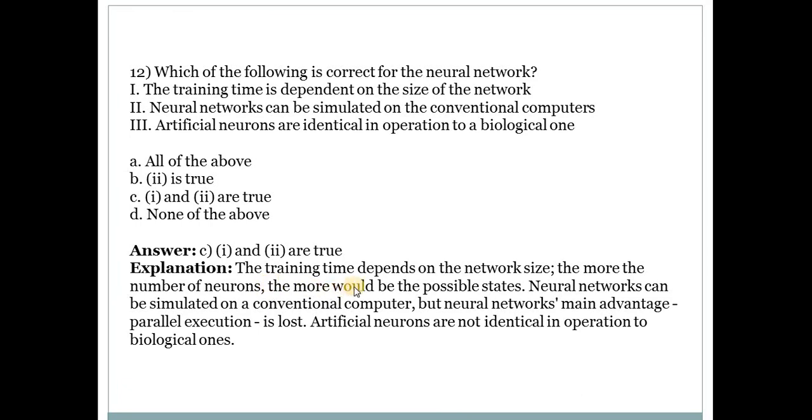Artificial neural networks are different. So here 1 and 2 statements are correct. Answer for this is C. Explanation is: The training time depends on the network size, it is correct. The more the number of neurons, the more would be the possible states. Neural networks can be simulated on a conventional computer, but neural networks' main advantage, parallel execution, is lost. And the last point is: Artificial neurons are not identical in operation to biological ones.